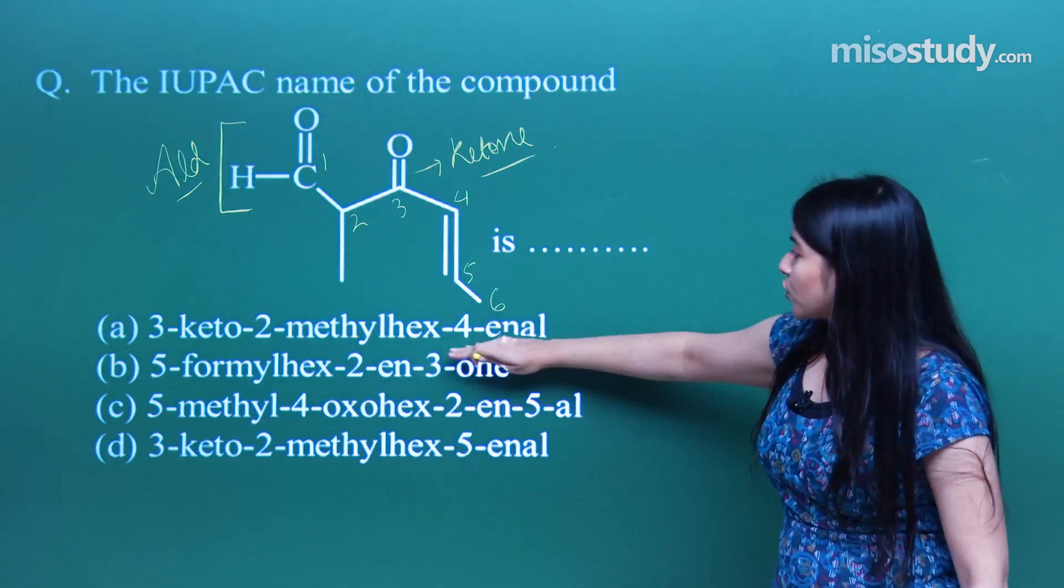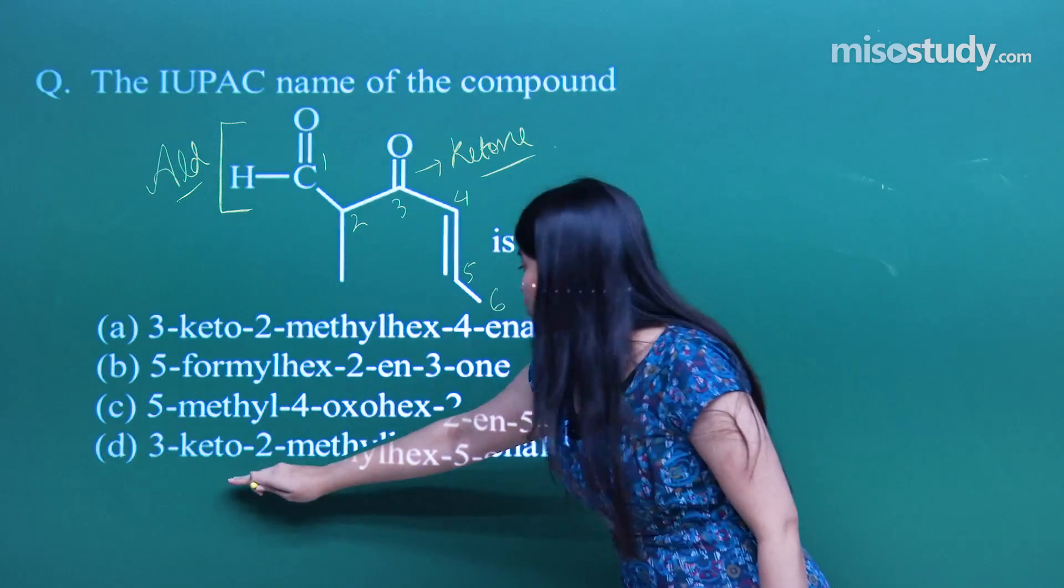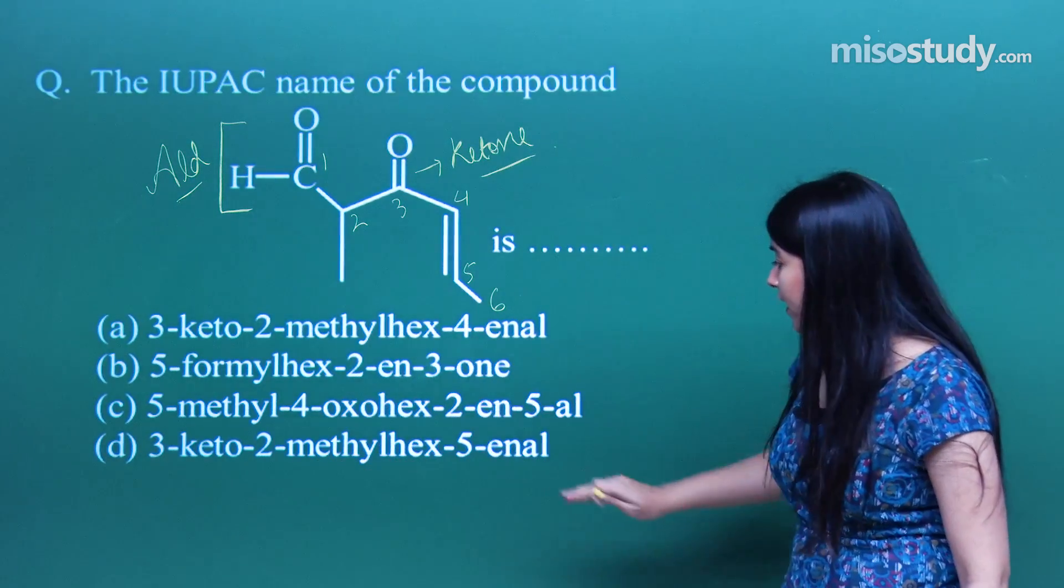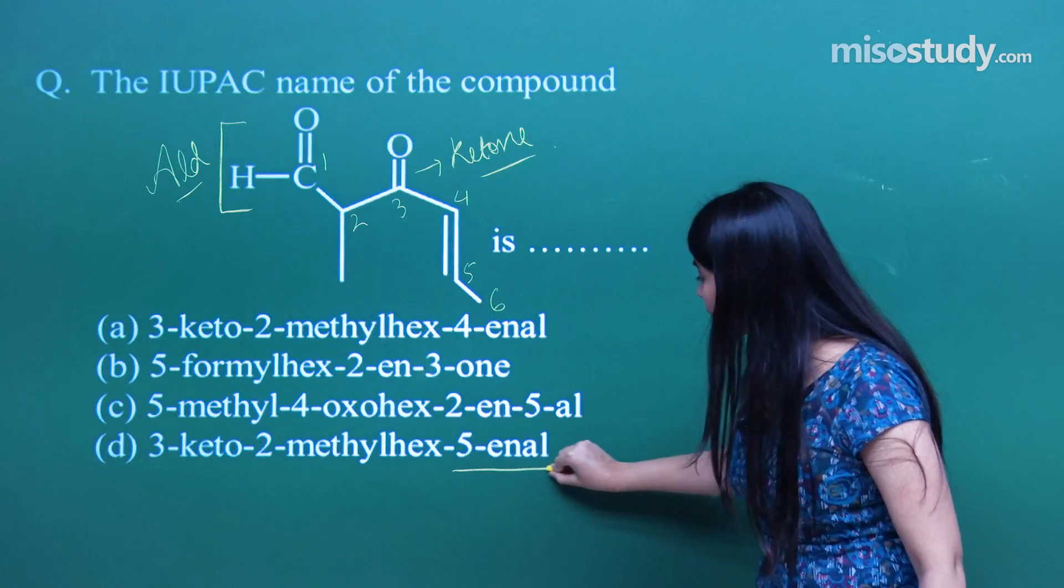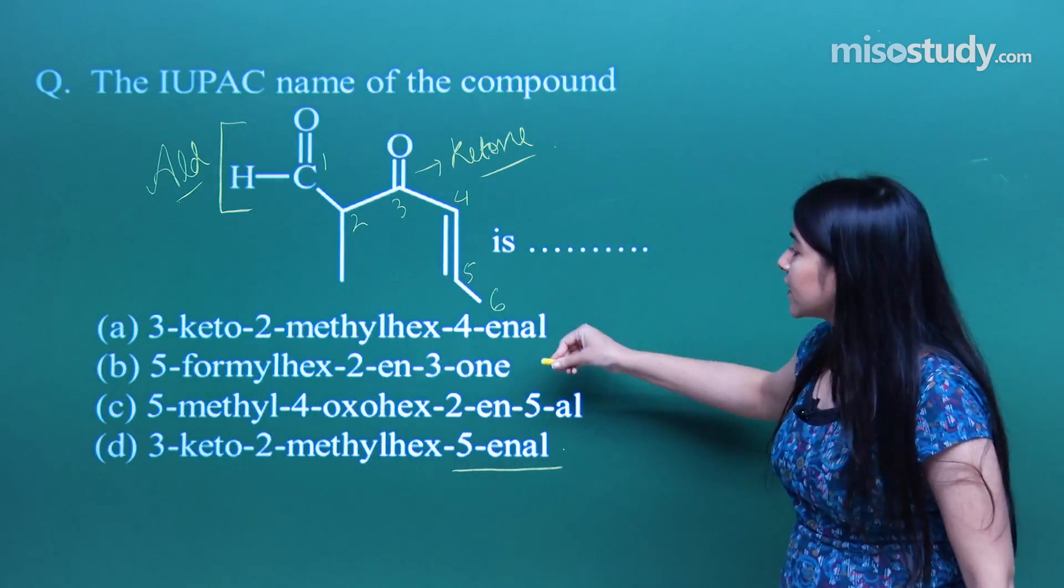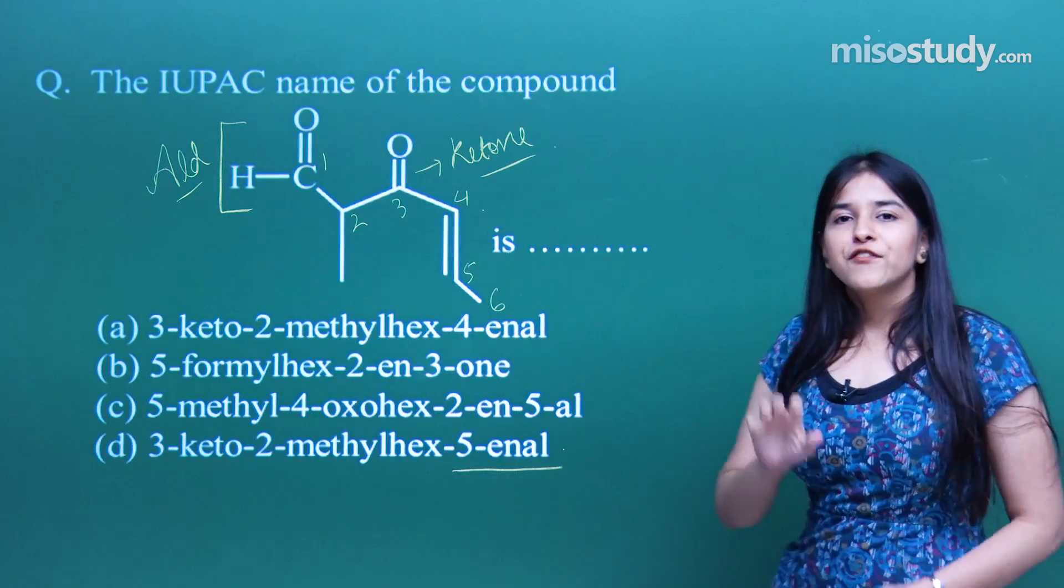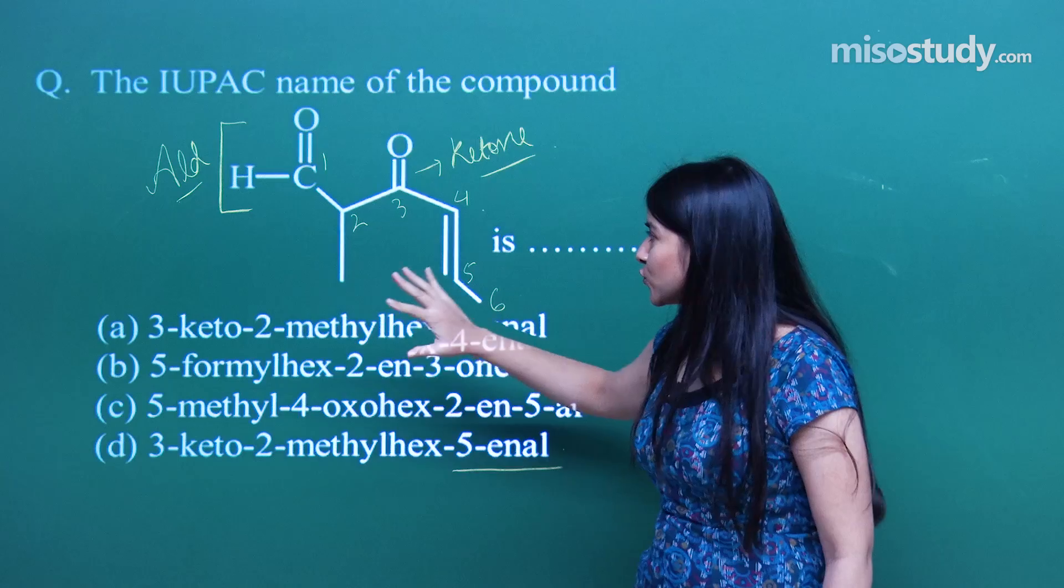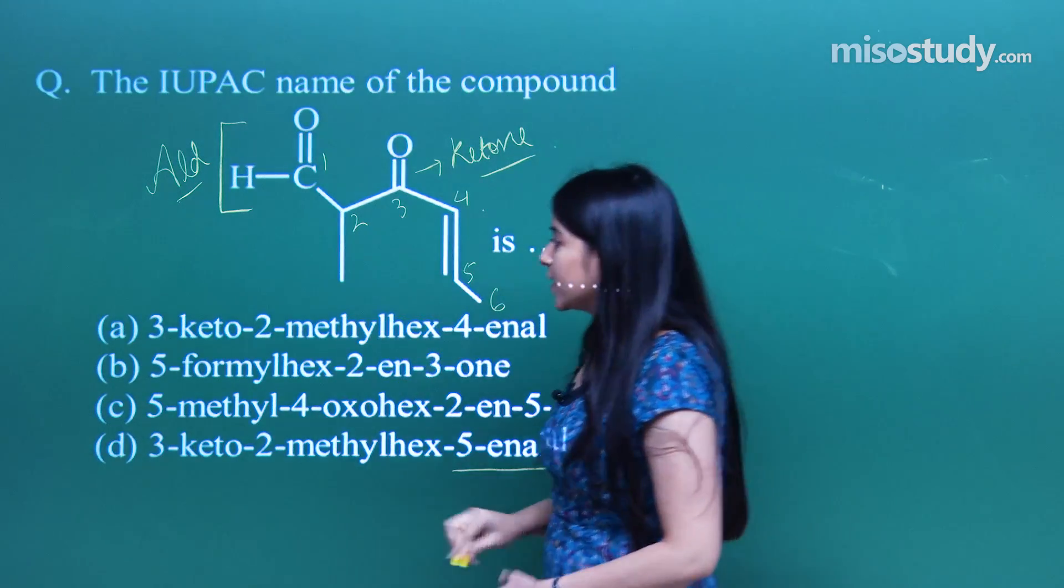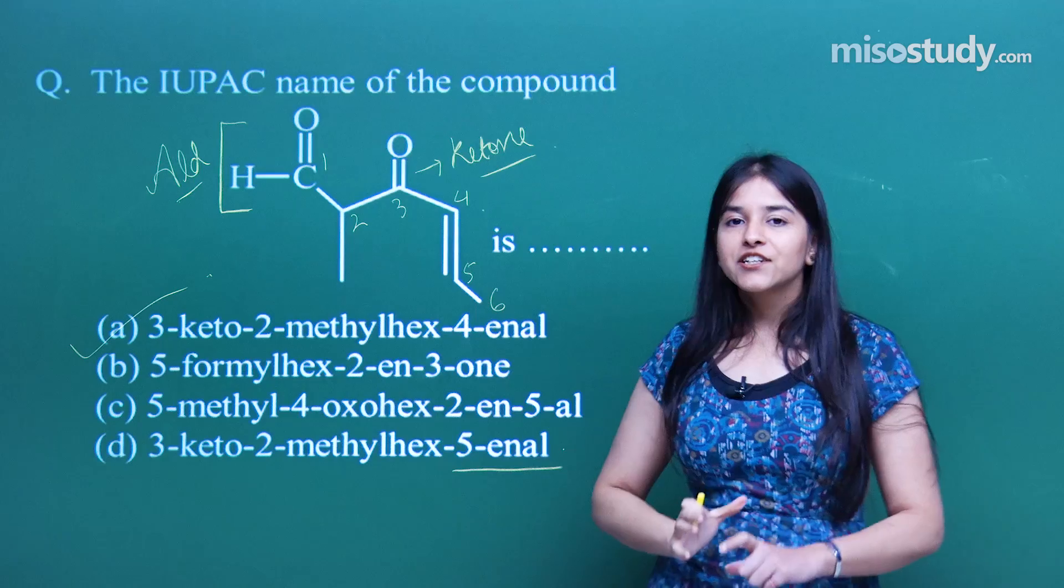On to my first, it's aldehyde, so it will be hex-4-enal. But what about 2-methyl-hex-5? On to the fifth position it's E. Here I can very well see that on to the fourth position I've got the double bond here. Finally, I've got the solution to this question, which is A here in this case.